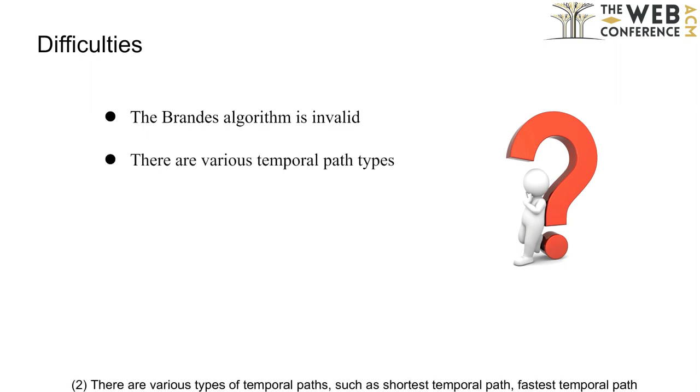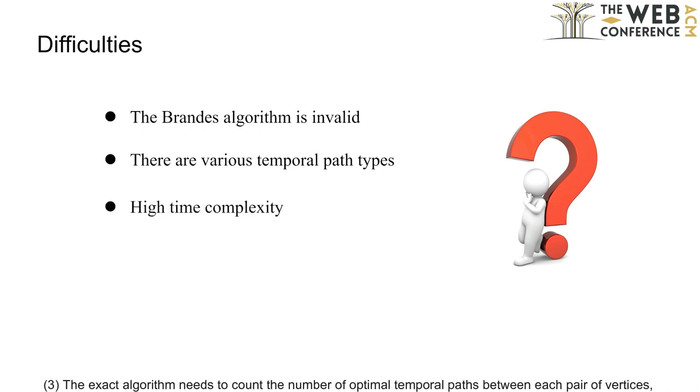Two, there are various types of temporal paths, such as shortest temporal path, fastest temporal path, and earliest temporal path, which are difficult to be uniformly processed. Three, the exact algorithm needs to count the number of optimal temporal paths between each pair of vertices, so the time complexity is high.